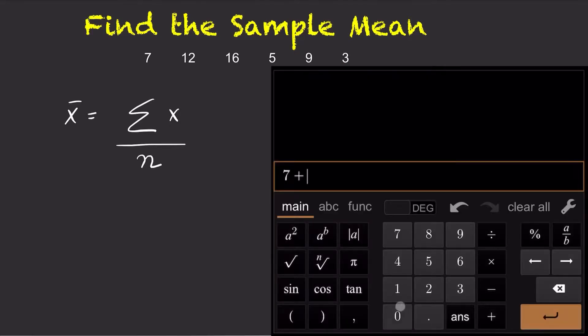Now, to find x bar, take each number from the data set, add them up, and the total is 52. So, write the sum in the numerator, and write the sample size in the denominator, which is 6.